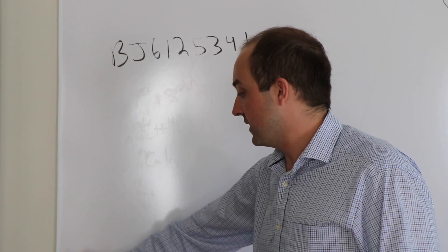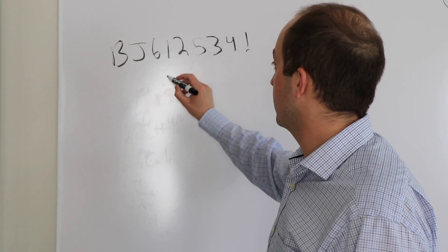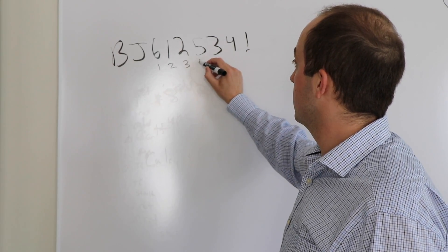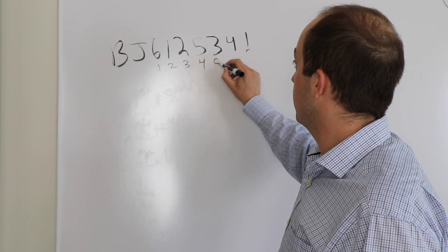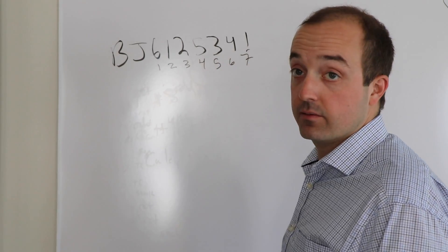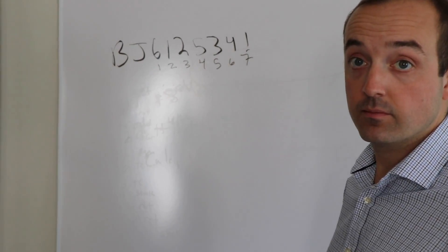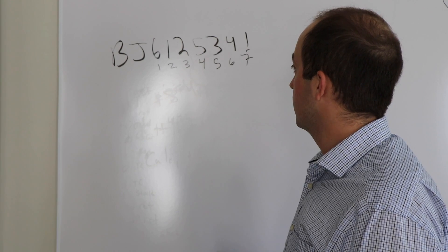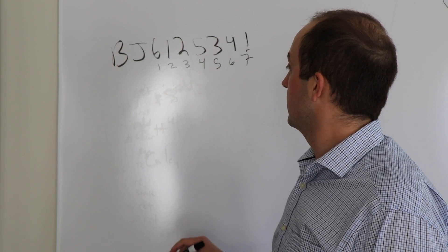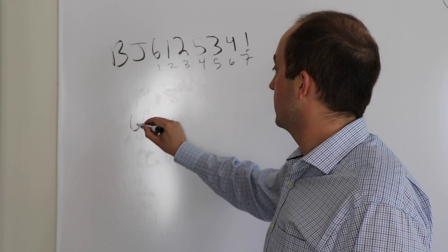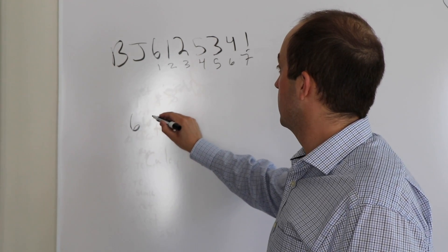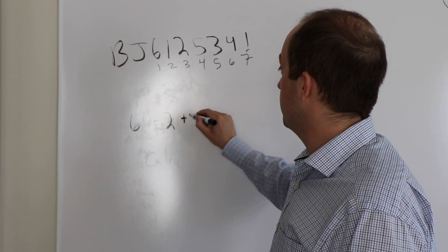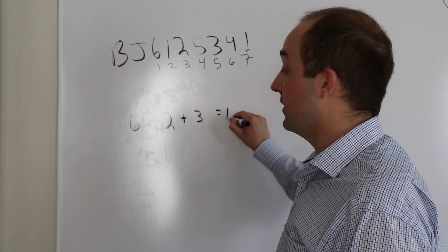So we'll work through the example. Labeling out the positions — first, second, third, fourth, fifth, sixth, seventh — we add the first, third, and fifth digits. That equals 11.